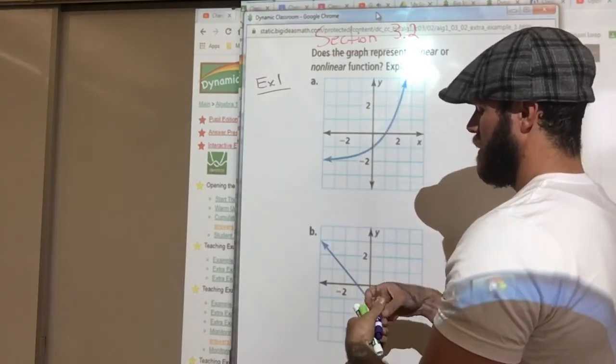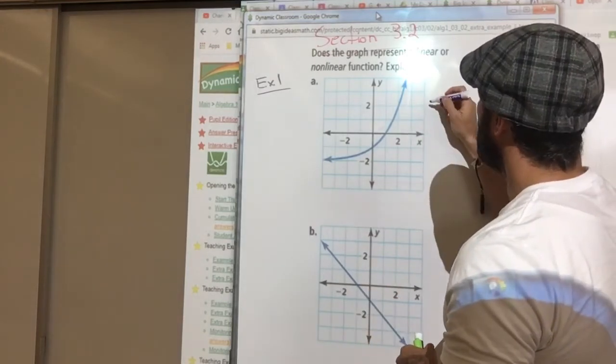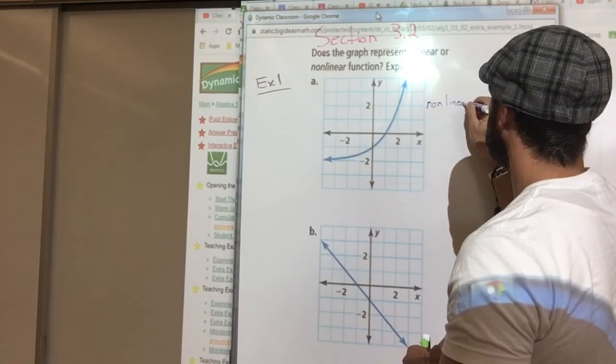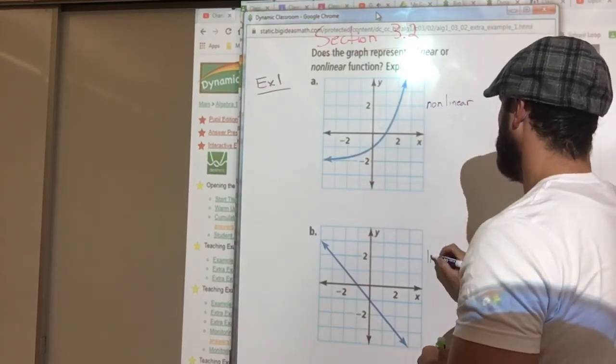So A would be nonlinear and B would be linear.